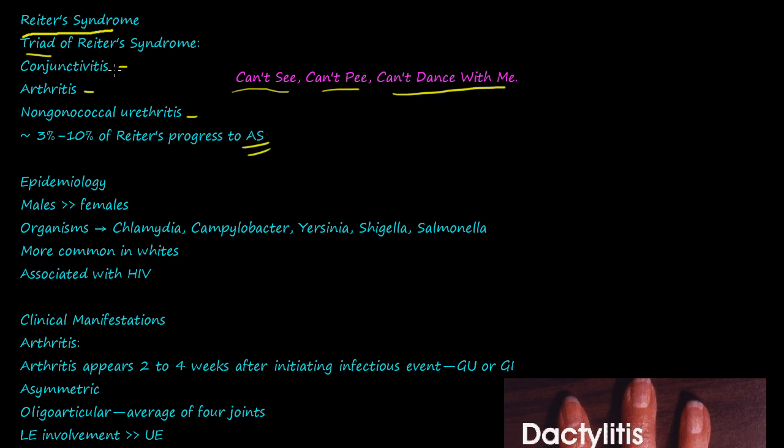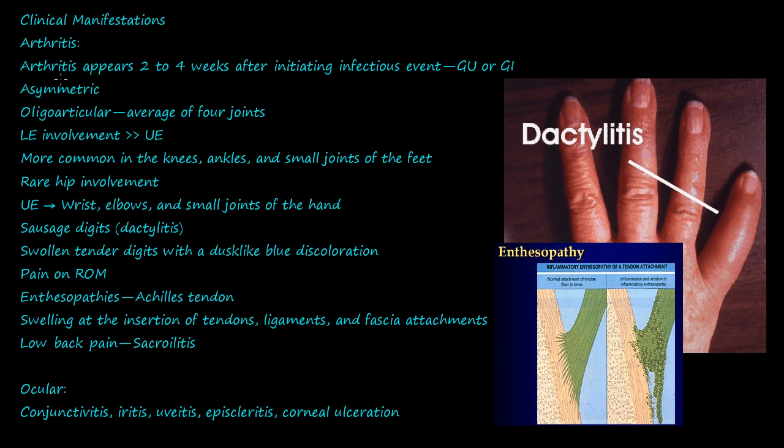The epidemiology of Reiter's syndrome is that it's a male-dominant disease. The organisms responsible are chlamydia, campylobacter, ureaplasma, shigella, and salmonella. It's more common in white individuals and is also associated with HIV.